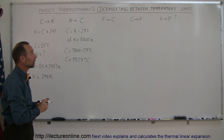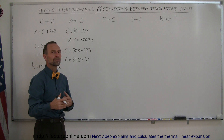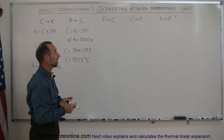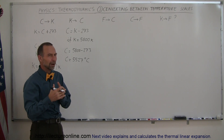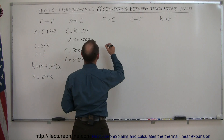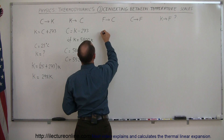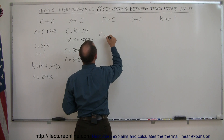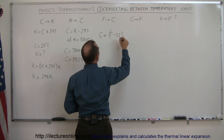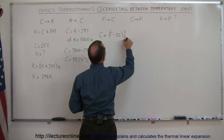Now, how do we change from Fahrenheit degrees to centigrade degrees? Let's say somebody comes from another country and drives through the Mojave Desert, looks at the thermometer, and sees 104 degrees Fahrenheit, and wonders how hot that is in centigrade degrees. If you have Fahrenheit degrees and want to convert to centigrade degrees, centigrade degrees is equal to Fahrenheit degrees minus 32, and then multiply that times 5 over 9.